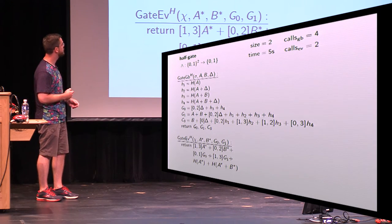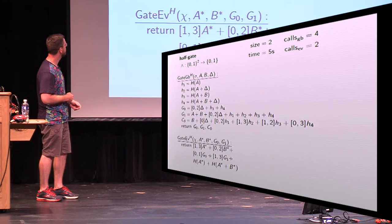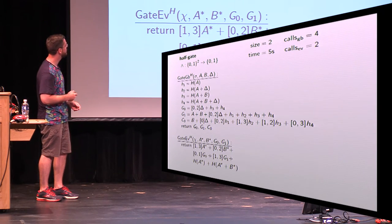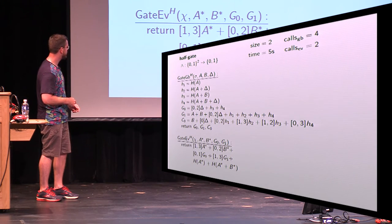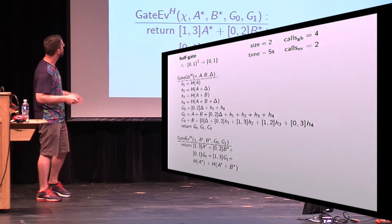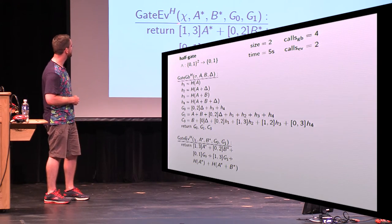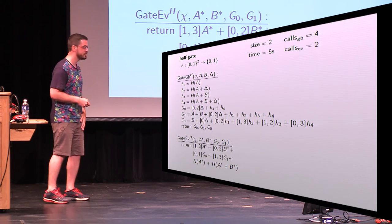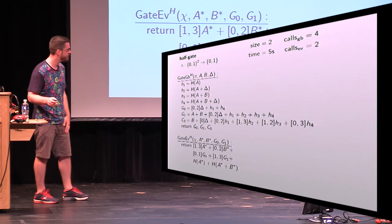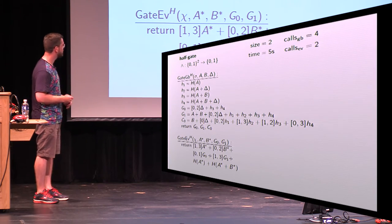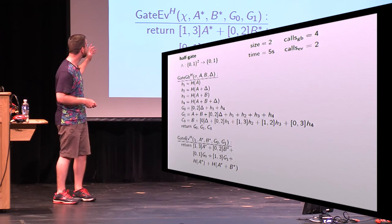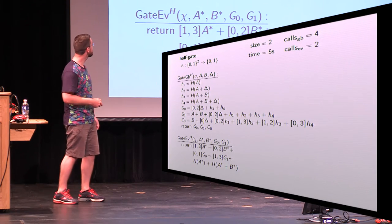Here's an example of one of the halfgate schemes we synthesized — we can generate thousands of these and enumerate them endlessly, it seems. There are two ciphertexts G1 and G2 in the garbled table, four oracle queries in the garbler, and two in the evaluator. The notation is tricky; there are subtleties with color bits and permutation bits that we support and expand on in the paper.